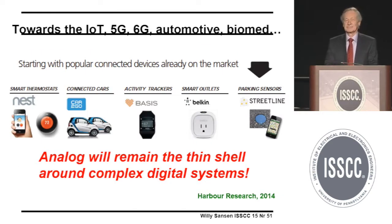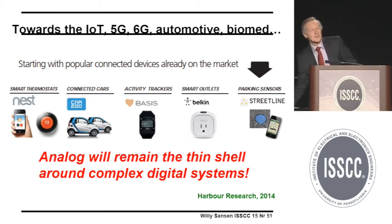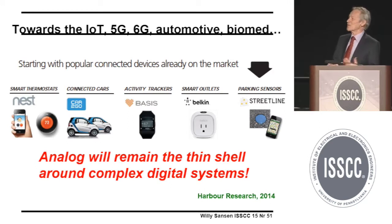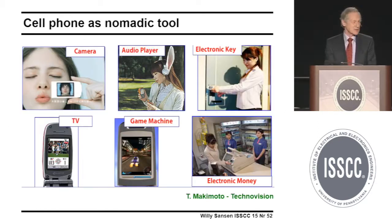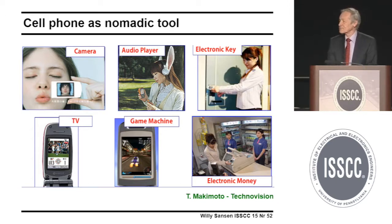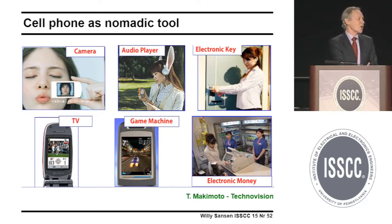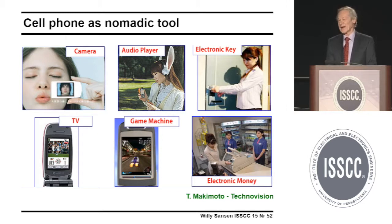For applications, I mention only two. The Internet of Things — of course, the big buzzword today, invading all applications we know. Automotive is certainly an important one. And 5G, 6G. I'm a strong believer in a phone close to my heart that does everything I need: communication, watching movies, paying bills — fitting in my pocket. There are major applications where analog will have to be used.